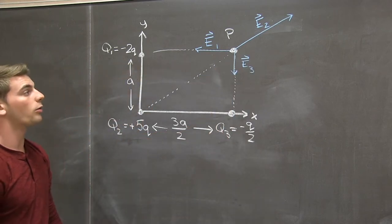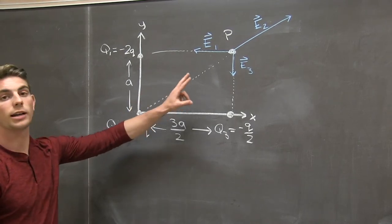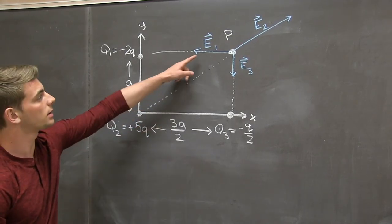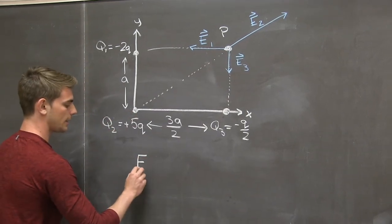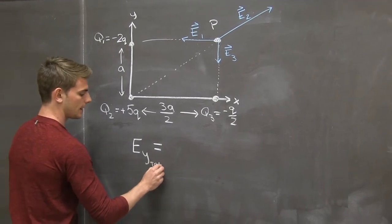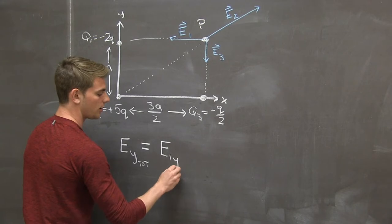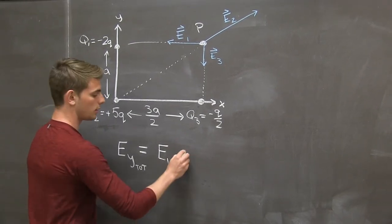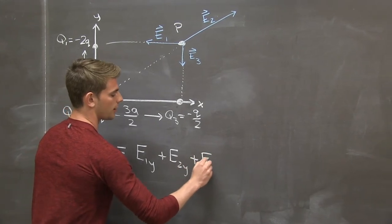So the overall y component of the electric field is going to be the sum of each y component of each of these individual electric fields. That is, ey total is going to be the y component of e1 plus the y component of e2 and the y component of e3.